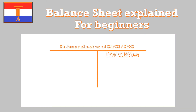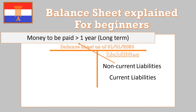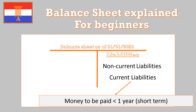On the liability side, you basically have two things: non-current liabilities and current liabilities. Non-current liabilities is basically money to be paid over a period longer than a year — think long-term debt and deferred taxes that you don't have to pay yet. Current liabilities is the same concept but short-term, less than a year. This includes short-term debts as well as amounts owed to suppliers for goods you've already received.